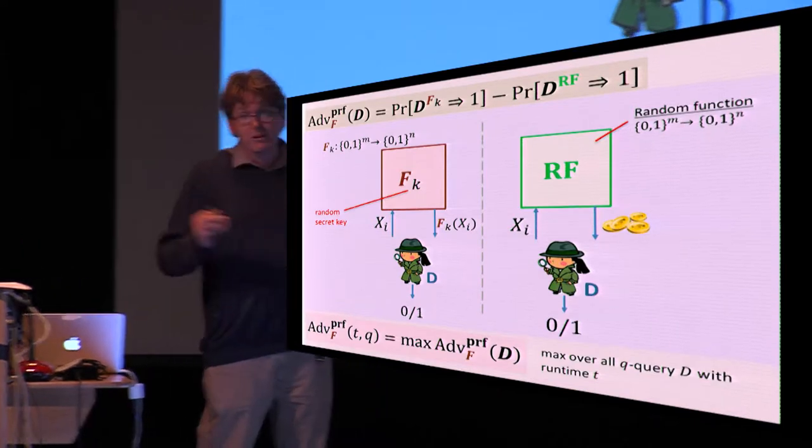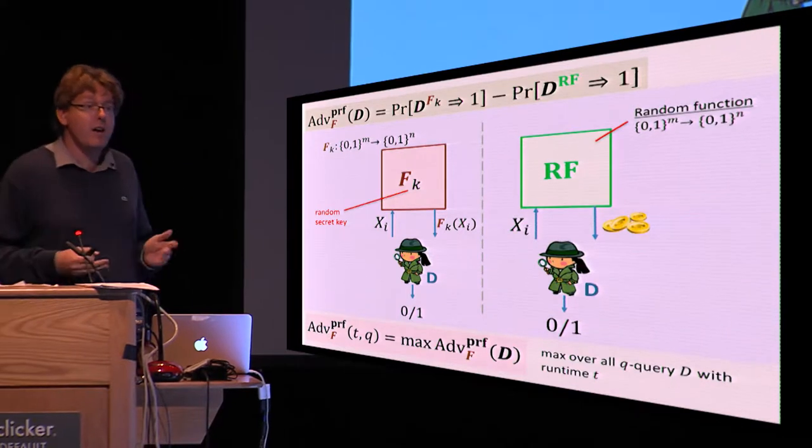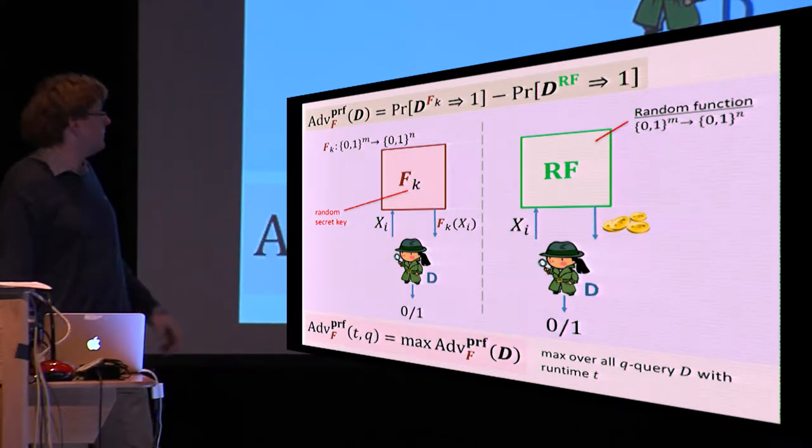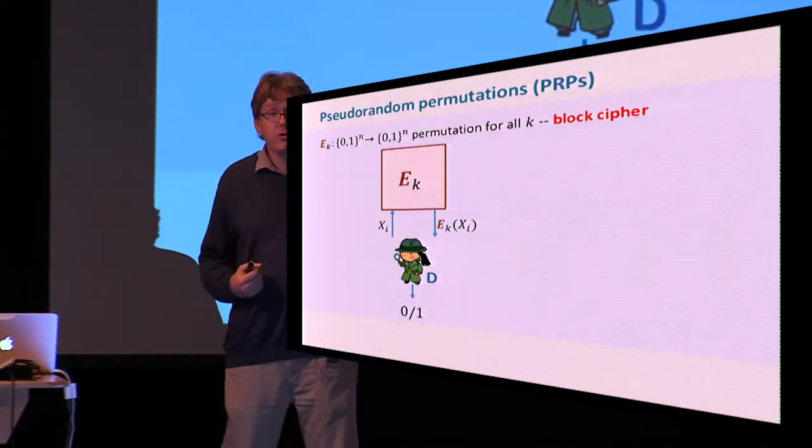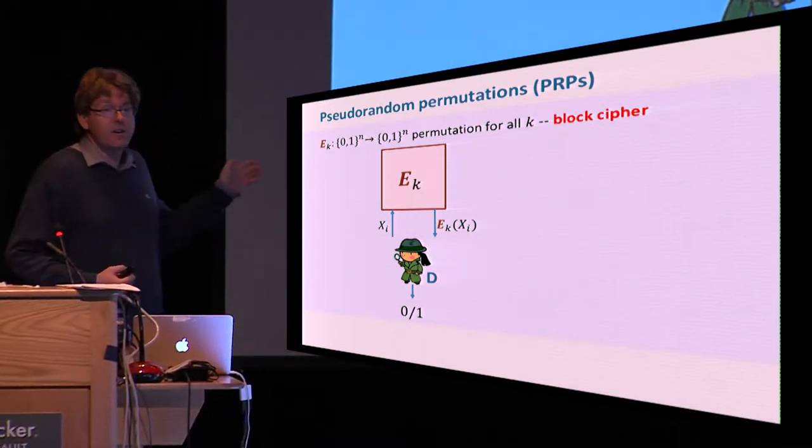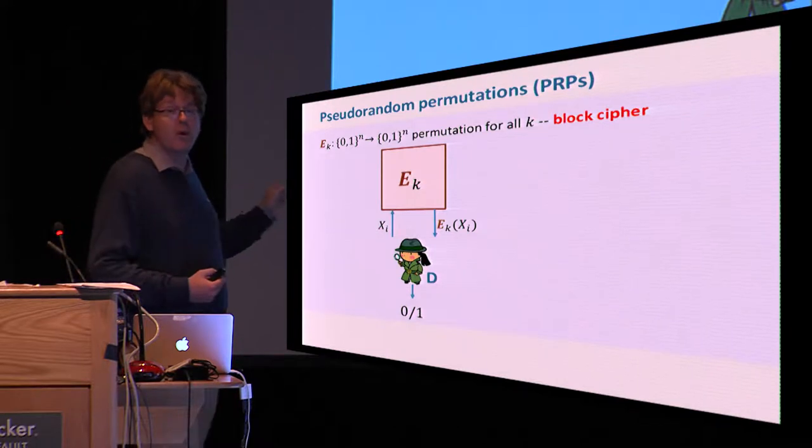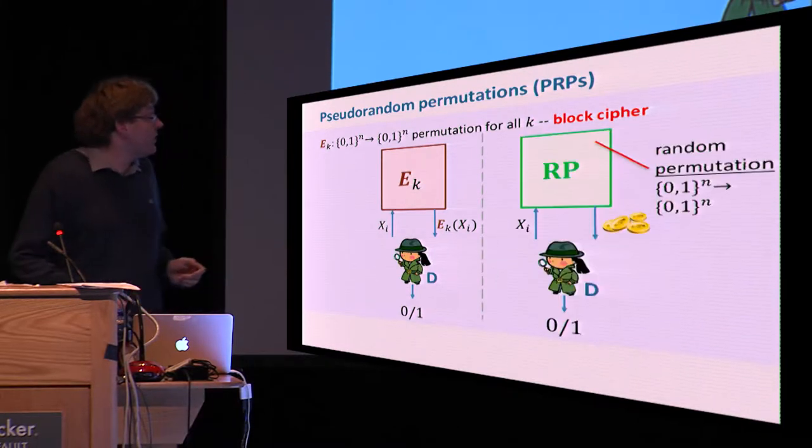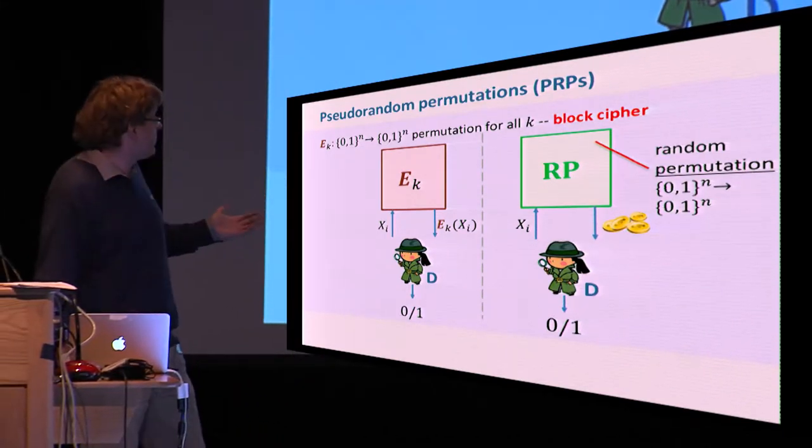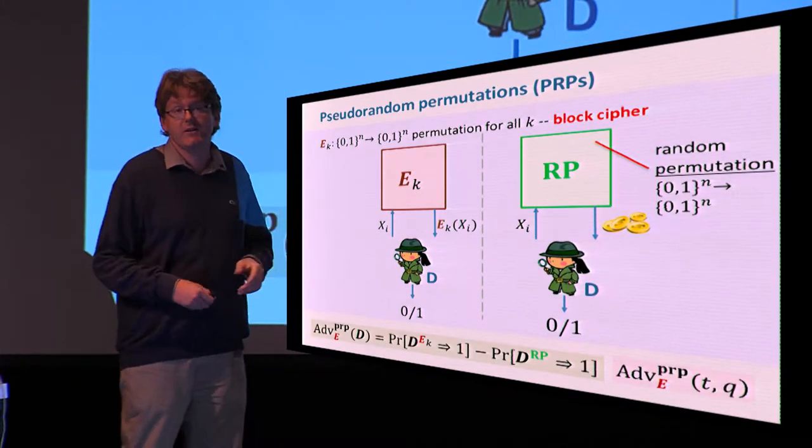Generally, we are interested in the best possible such advantage, given a certain distinguisher running time t and a budget of queries q, and we would like for f to be a good PRF, this to be as small as possible for t and q as large as possible. A related notion is that of pseudorandom permutations, or PRPs, better tailored at block ciphers like AES. Here, the context is that our keyed function is a permutation for each value of the key, so it's one-to-one and has no collisions in the outputs. It's fair here to only require indistinguishability from a random permutation which returns outputs that are random but are distinct. One can formalize this again in terms of corresponding PRP distinguishing advantage.